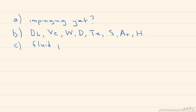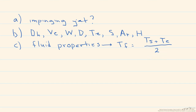Then determine the appropriate temperature to look up fluid properties. For these correlations, you use the film temperature, which is the temperature of the surface plus the temperature of the air or gas exiting the nozzle, divided by 2. Remember this film temperature is in Kelvin. All the correlations require the Reynolds number, so you use the velocity at the exit, the hydraulic diameter, divided by the appropriate kinematic viscosity.